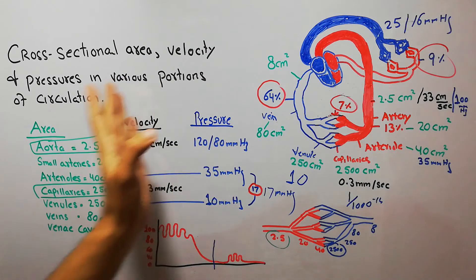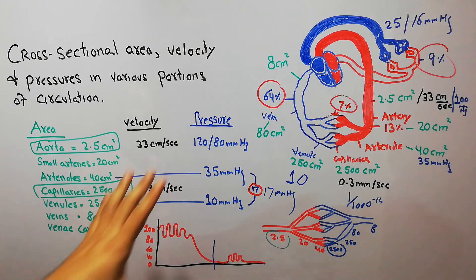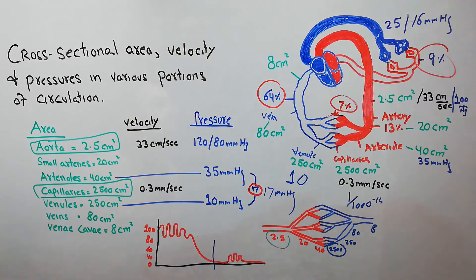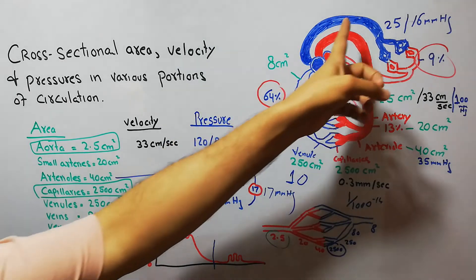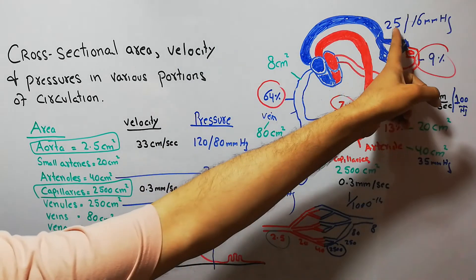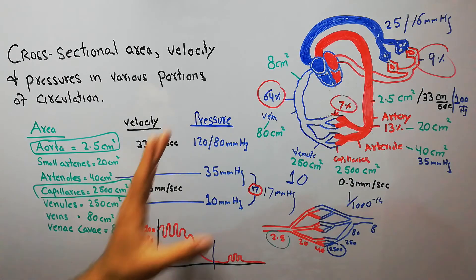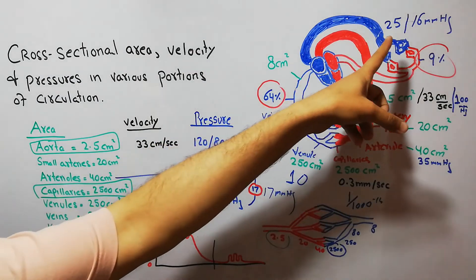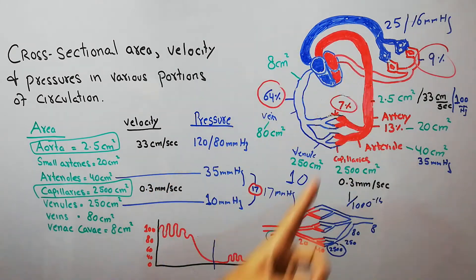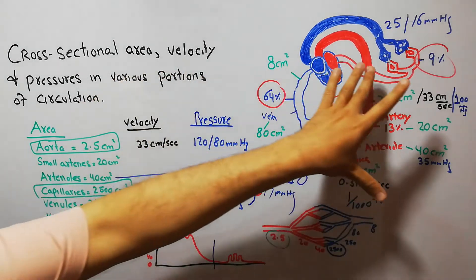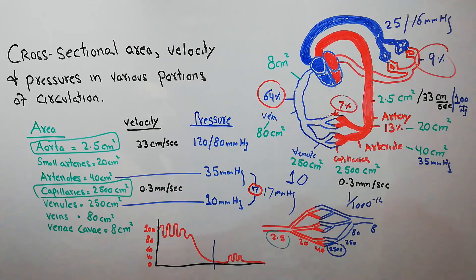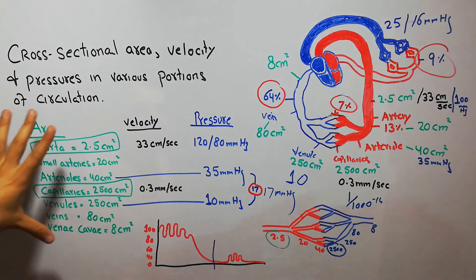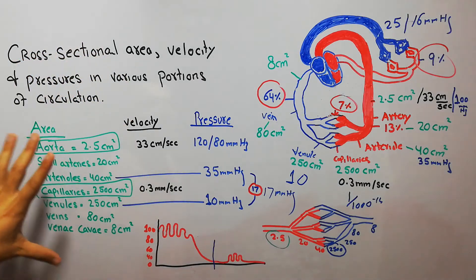Pressure in the circulatory system decreases from the aorta toward the veins. In the pulmonary circuit, the pulmonary arteries have a pressure of around 25 to 16 millimeters of mercury, which is much lower than in the systemic arteries. This low pressure ensures that all the blood going to the lungs gets properly oxygenated.